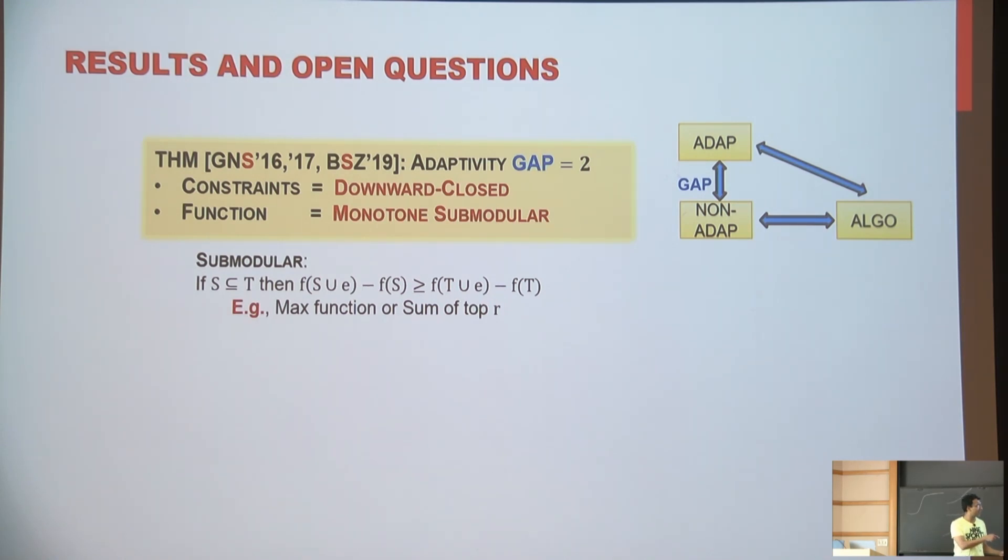And for very complicated constraints, like any downward closed constraints. So not just selecting going up to at most k buyers. But downward closed basically means if a set is feasible, then also a subset is also going to be feasible. So for such a large class, the adaptivity gap is at most two. And there exist instances in which the gap can also become two. So basically we kind of understand exactly how large the adaptivity gap can get.